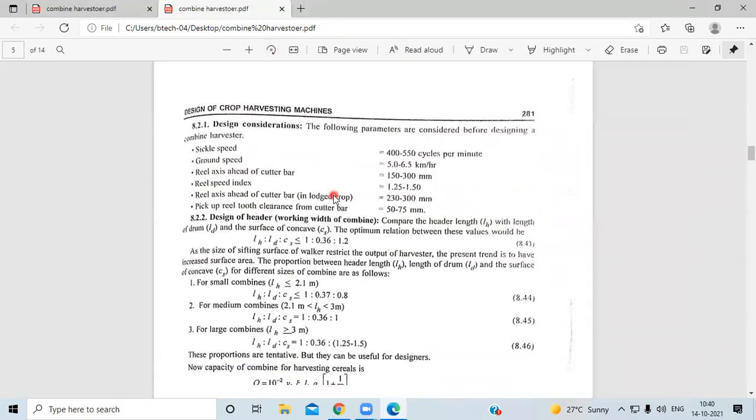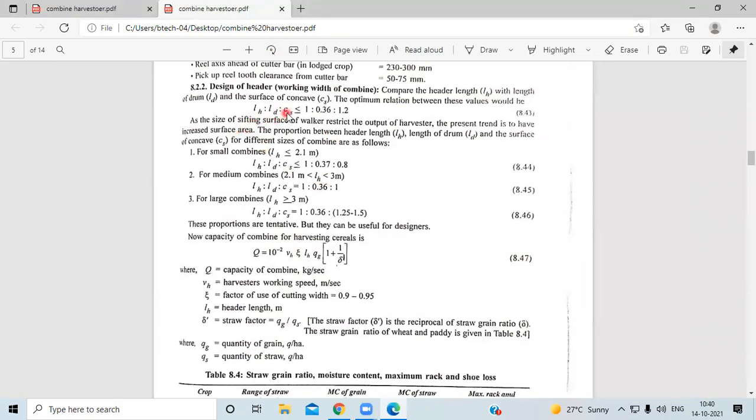Let us go through the design process. First is the design of header. Compare the header length with the length of the drum and the surface conveyor. LHS will be less than 1.0, 1.2. For small combine this value is less than 1.2, LHS is less than 2.1 meters. For medium combine it is between 2.1 to 3 meters. For large it is greater than 3 meters.